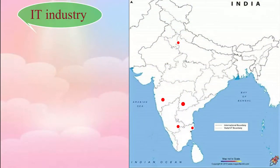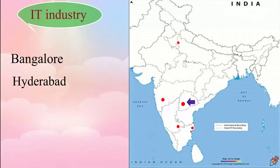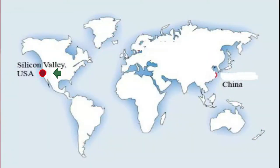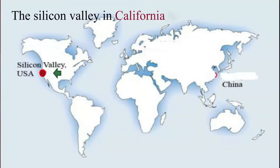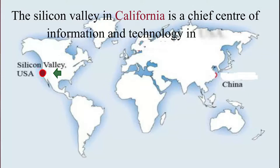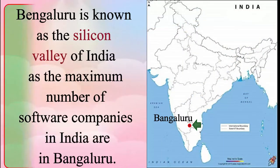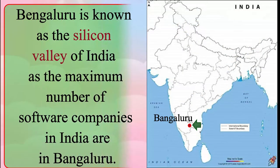In India, IT industry is established in Bangalore, Hyderabad, Pune, Chennai, and Noida. The Silicon Valley in California is a chief center of information and technology in the United States of America. Bengaluru is known as the Silicon Valley of India as the maximum number of software companies in India are in Bengaluru.